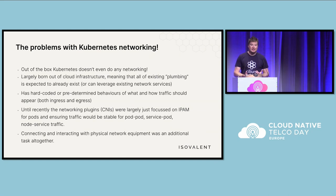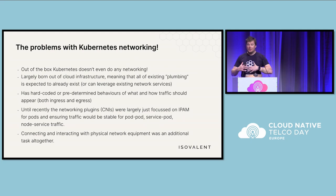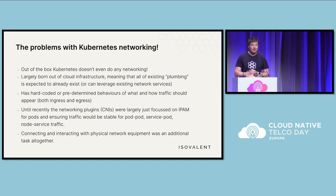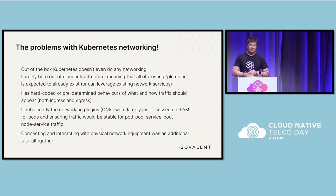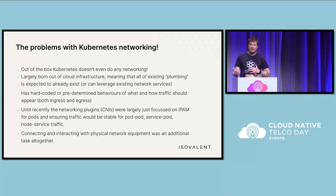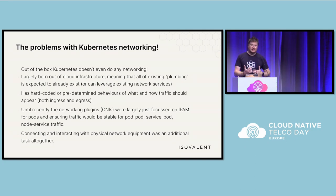What are the problems with Kubernetes networking out of the box? For most people, if you've never really deployed it yourself, Kubernetes doesn't actually come with any networking capabilities. Networking is a plugin that you need to apply on top. Largely born out of the cloud infrastructure, that existing plumbing is usually already expected to exist. When you're trying to do it yourself, there's a lot of things that are going to be missing. There's a lot of predetermined behavior in terms of what traffic looks like coming into and out of a Kubernetes cluster, which makes sense for very modern or brand new applications, but porting existing applications or expecting certain behaviors just simply isn't possible.